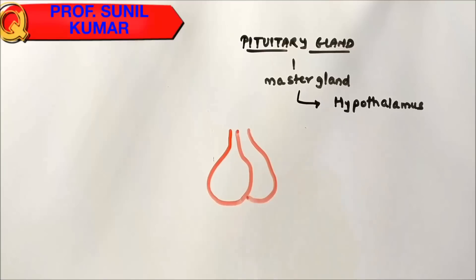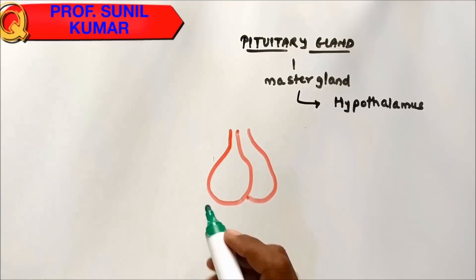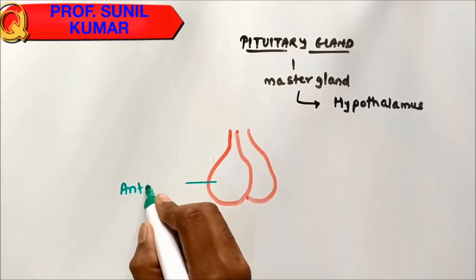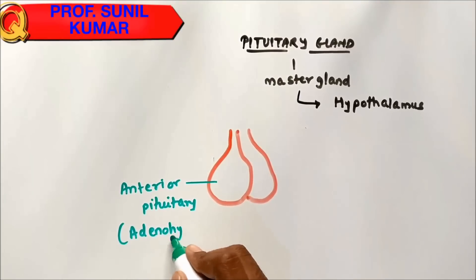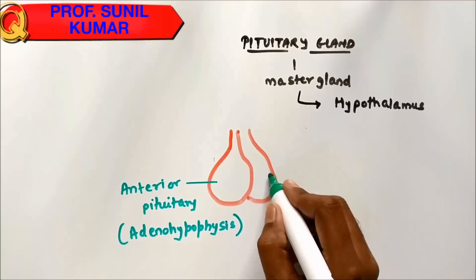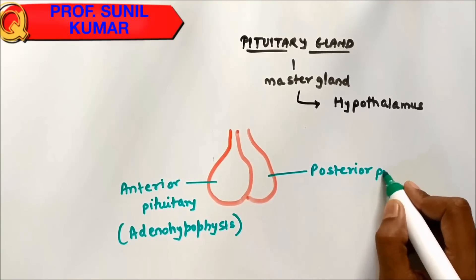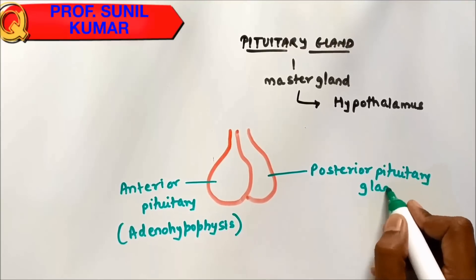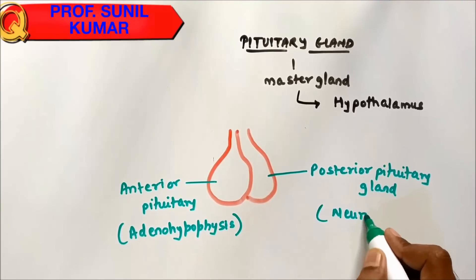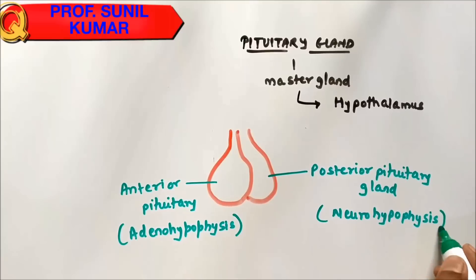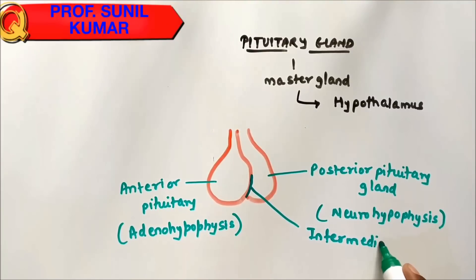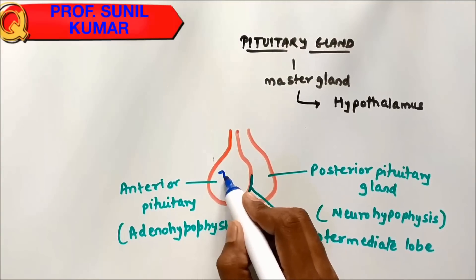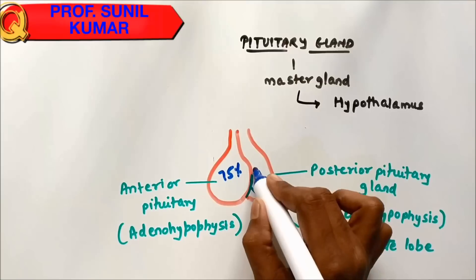When you draw the pituitary gland, you draw one big circle and one small one. The big one is called the anterior pituitary gland, or adenohypophysis. The small one is called the posterior pituitary gland, or neurohypophysis. The middle lobe is called the intermediate lobe.